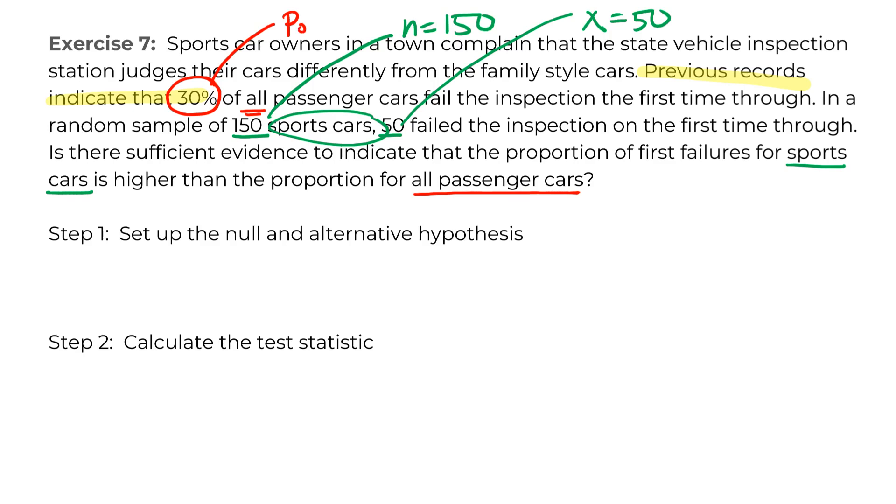So if we go to set this up, our null is that the P, which is the true proportion of first failures for sports cars, is the same as it is for passenger cars. And we've been told passenger cars have a failure rate of 30%.